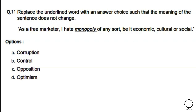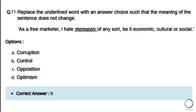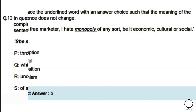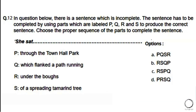Moving on to the language section: Replace the underlined word with an answer choice such that the meaning of the sentence does not change. Sentence: 'As a free marketer, I hate monopoly of any sort, be it economic, cultural or social.' Options: a) corruption, b) control, c) opposition, d) optimism. The right answer is option B — control.